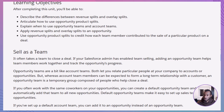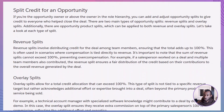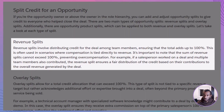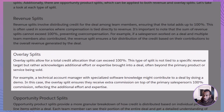Moving on to splitting credit — this is crucial for recognizing everyone's contributions on a deal. There are two main types of opportunity splits. Revenue splits distribute credit among team members, with all percentages adding up to 100%, ensuring fair compensation based on contributions tied directly to revenue. Overlay splits allow credits to exceed 100%, acknowledging extra effort or specialized skills that go beyond the main sales efforts.